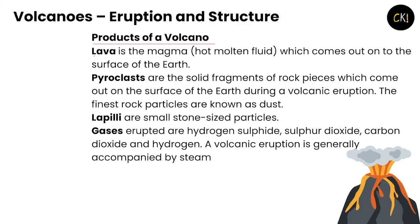The products of a volcano include lava, which is hot molten fluid magma that comes out of the surface of the earth. Pyroclasts are solid fragments of rock pieces which come out during volcanic eruptions. The finest particles are known as dust. Lapilli are small stone-sized particles from volcanic eruptions.